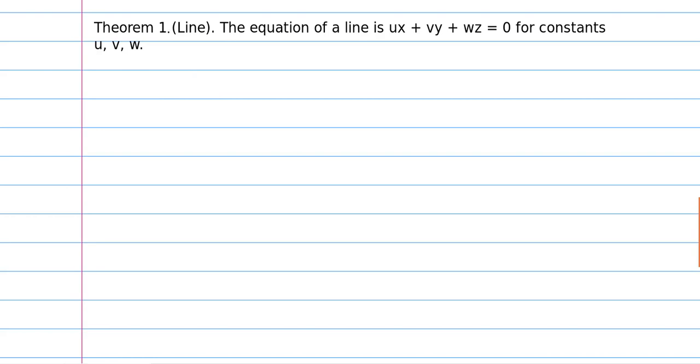So here we have our first theorem, that the equation of a line is ux plus vy plus wz equals 0 for some constants u, v, and w. These constants are unique for a line.